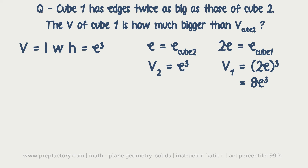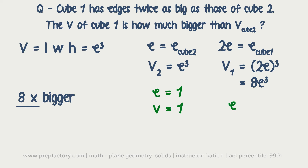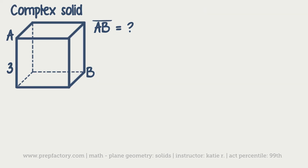Comparing E³ and 8E³, the volume is 8 times bigger, so the answer is 8. You can also solve this with numbers: let the edge of Cube 2 equal 1, so its volume is 1. The edge of Cube 1 is twice as big, so it's 2, and the volume equals 2³ = 8. Same answer — sometimes using our acceptable cheating methods makes things a little bit easier.